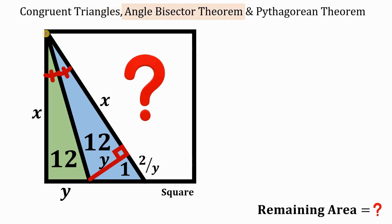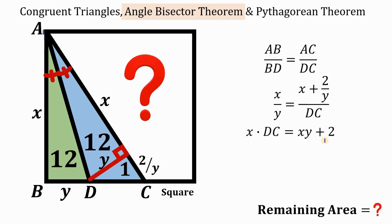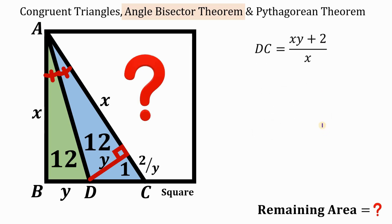Let's name some important points: vertex A, B, C, and D. Using the angle bisector theorem, the ratio of AB to BD equals AC to DC. Here AB is x, BD is y, AC is x + 2/y, and we solve for DC by cross-multiplying: x·DC = xy + 2, so DC = (xy + 2)/x.